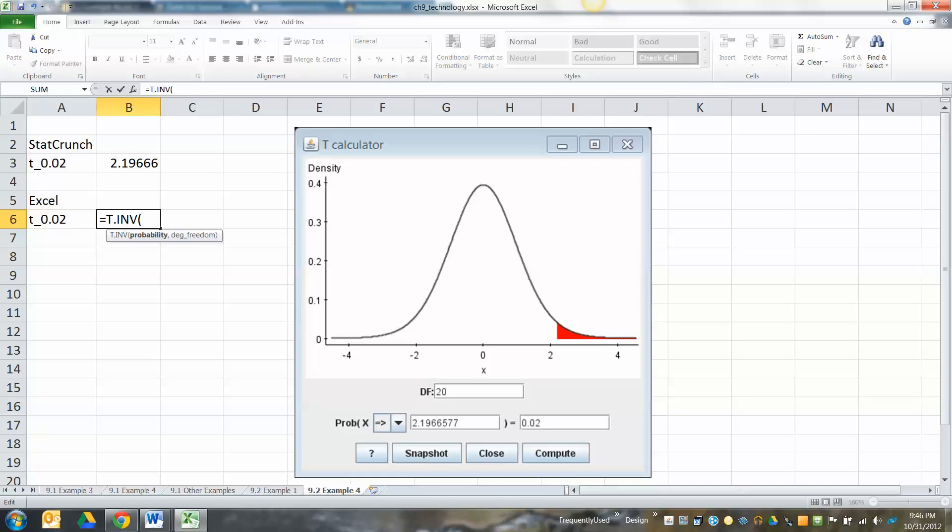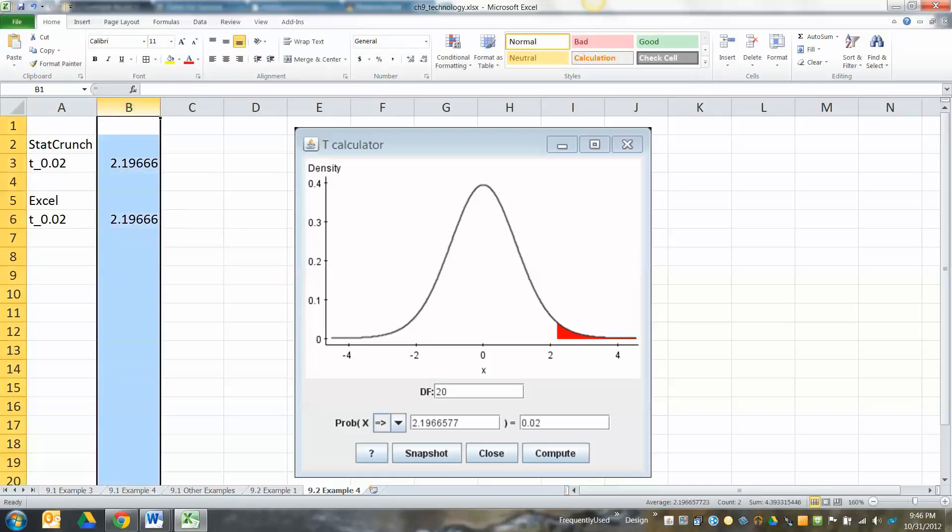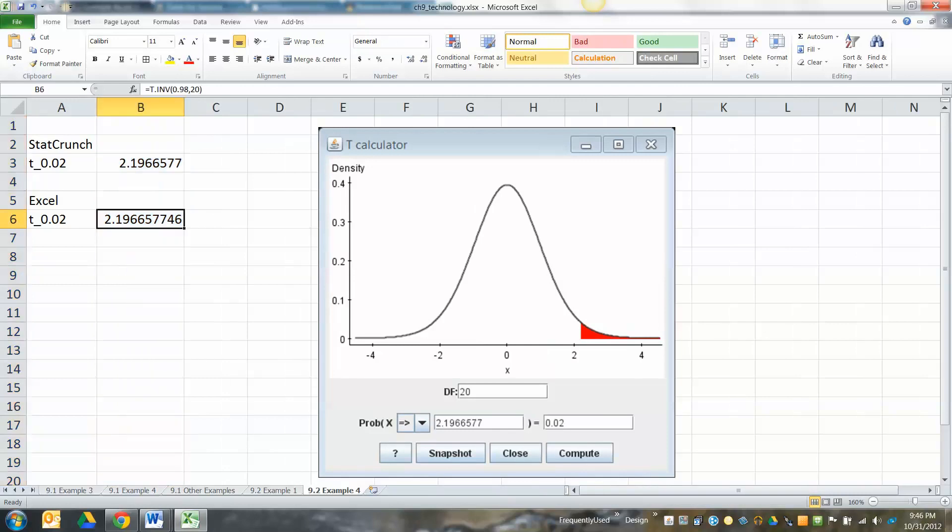The right tail was 0.02, so the left tail is 0.98, comma 20 degrees of freedom. You've got to remember to do the left tail if you're going to get it right from Excel. So if I just type that, that's how to do it in Excel. I'm going to put this here so we can see the notation.